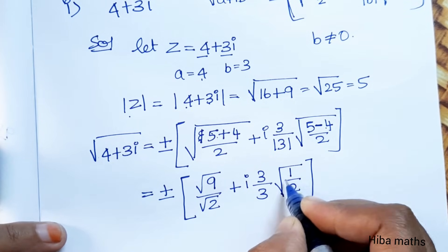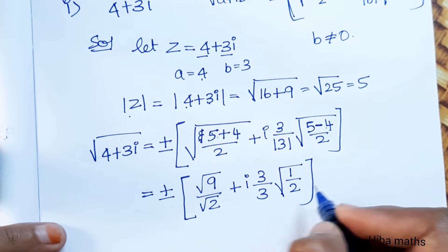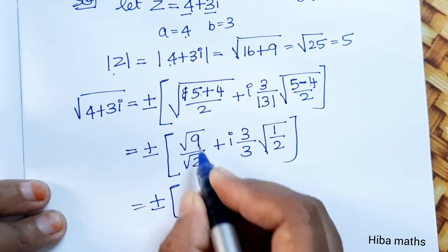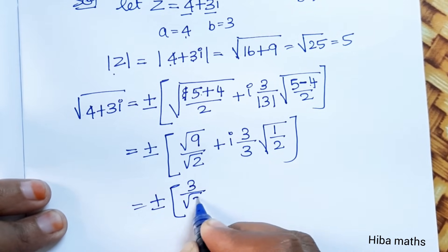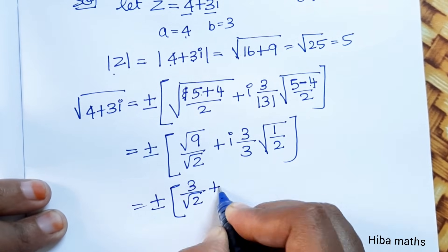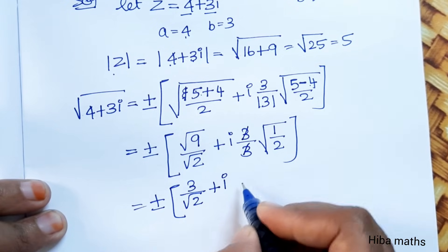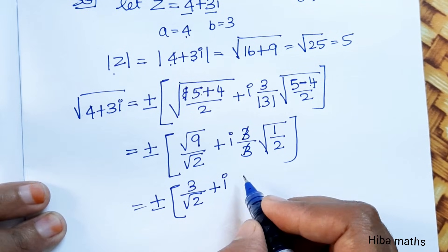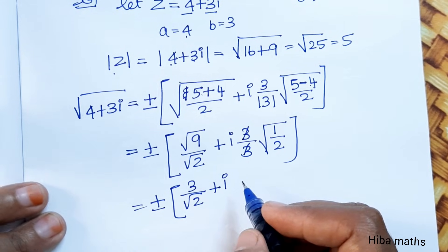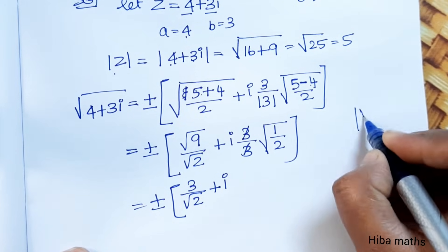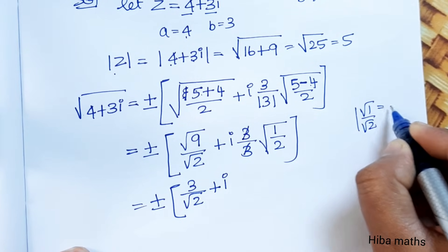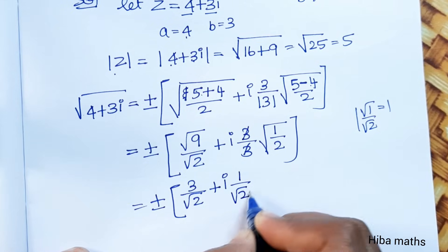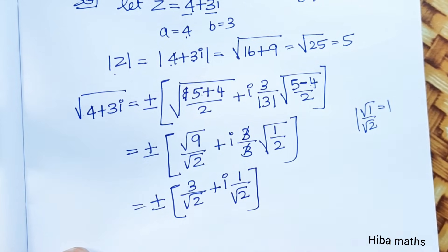We can write root of 1 and root of 2. So plus or minus root 9 value 3, giving 3 by root 2, plus i into 3. The 3 cancels. Root of 1 by root 2 has value 1, so we write 1 by root 2. This is our answer.